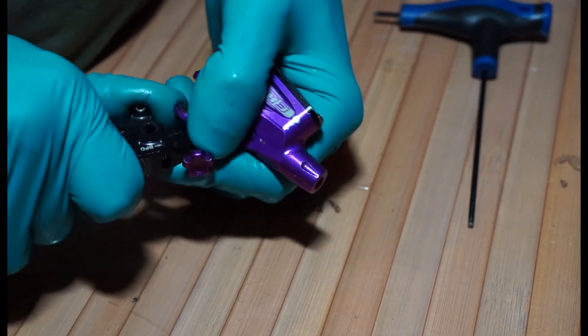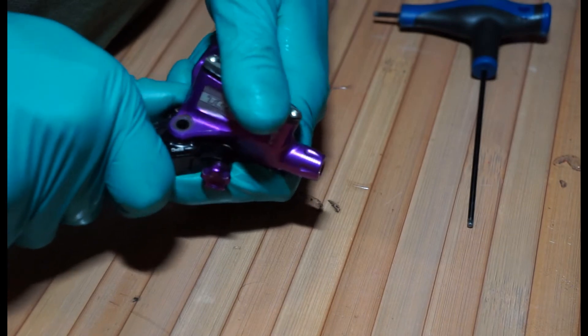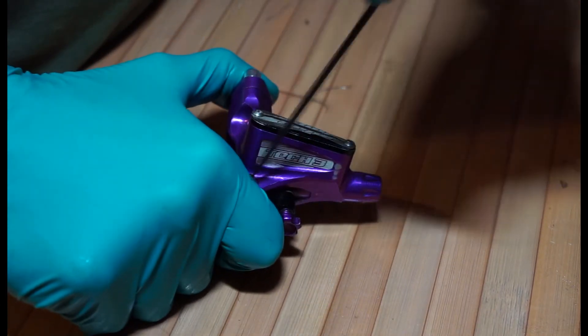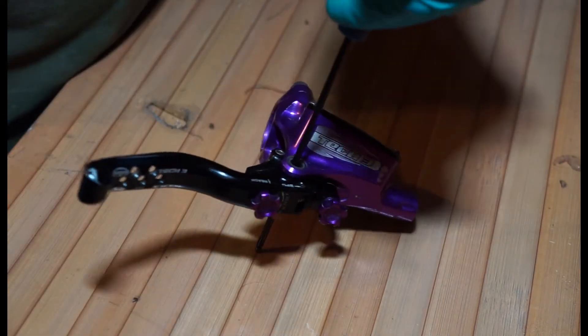As I slide this lever into the body, I try and put this allen key through all these holes at once just to retain it there. That's going to go there. I'm going to hold that. Just grab the allen key and wiggle it into the hole like so.